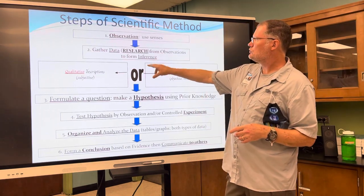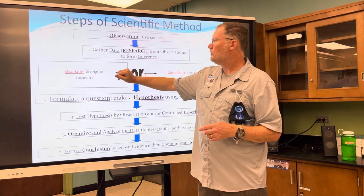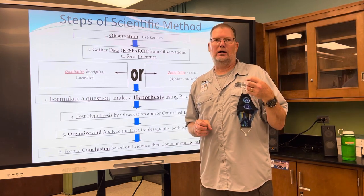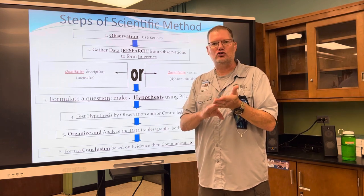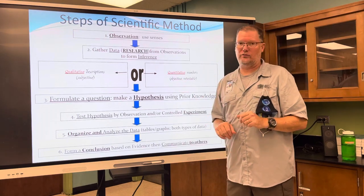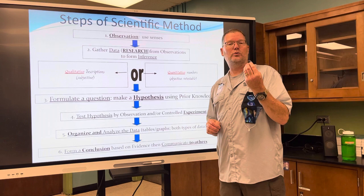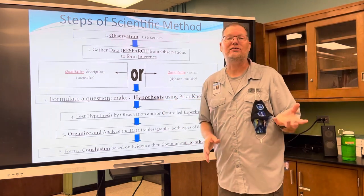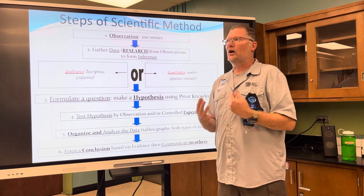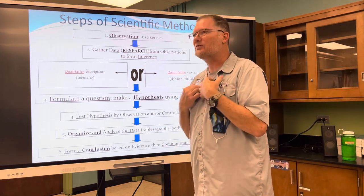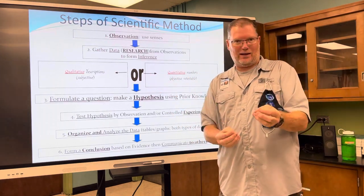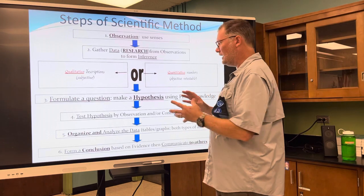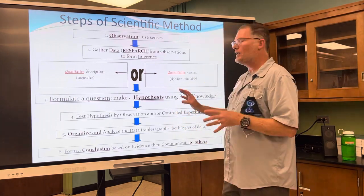Going back to research: there are qualitative descriptions — qualities like color, shape, smell, texture — and there are quantitative observations, which are objective measurements and numbers. That's mainly what you need in this process. Then once you have a hypothesis, you can test it. It has to be a testable hypothesis. Untestable things are those opinions, like 'Mr. Keene is the best teacher in the school' — you can't really measure that. So it has to be testable.